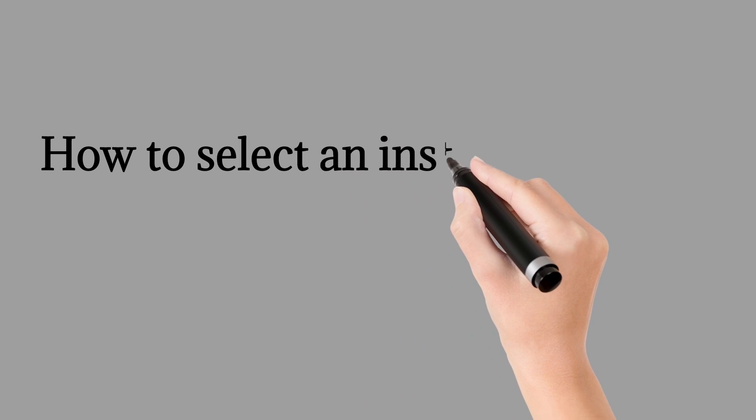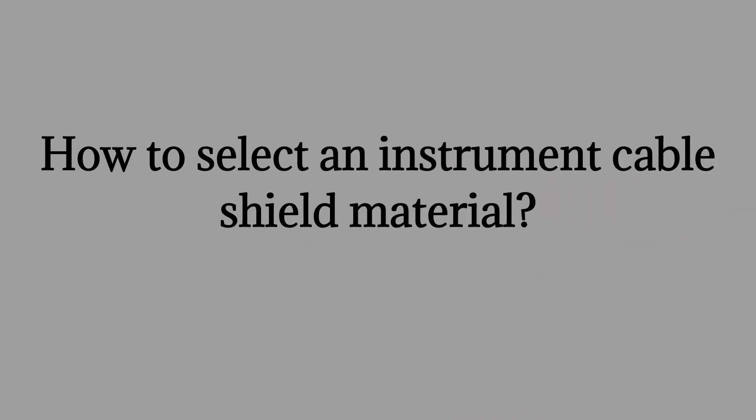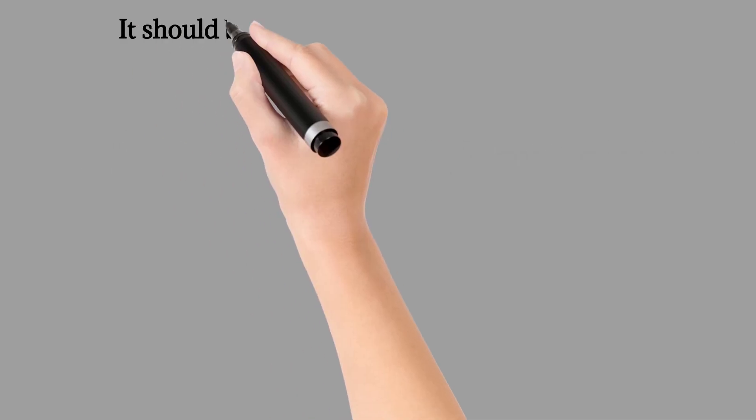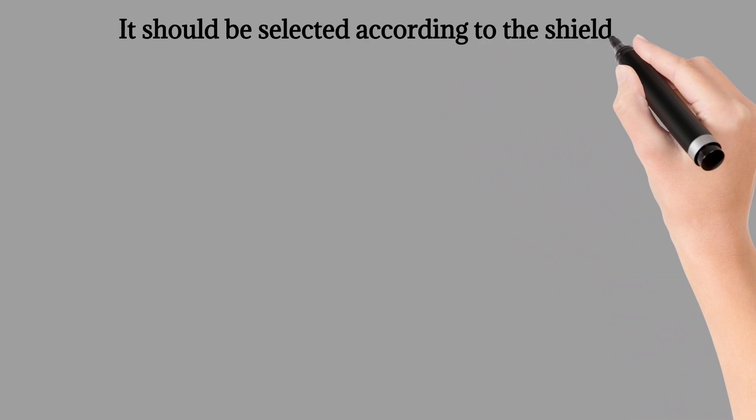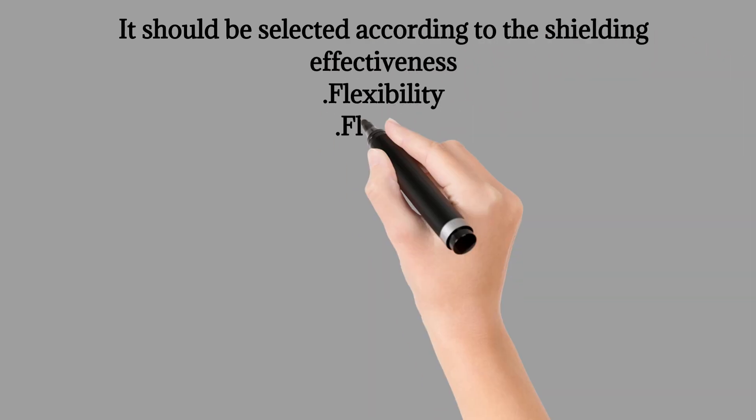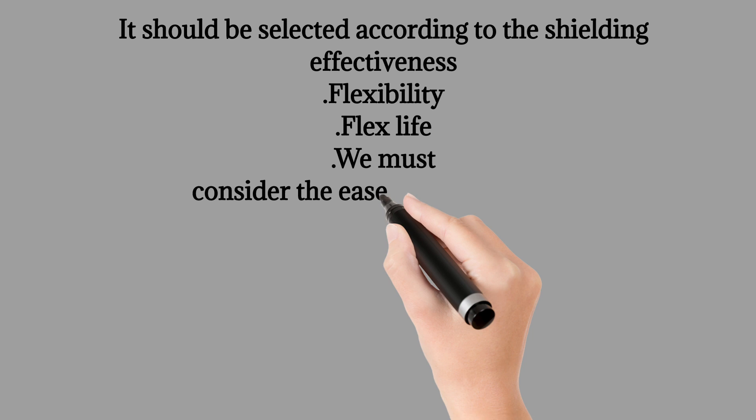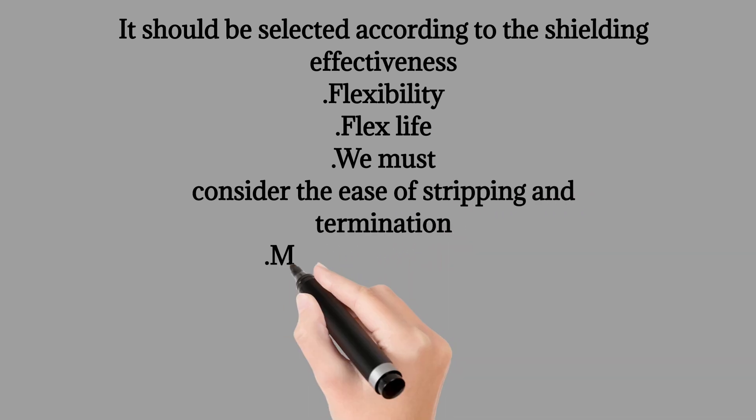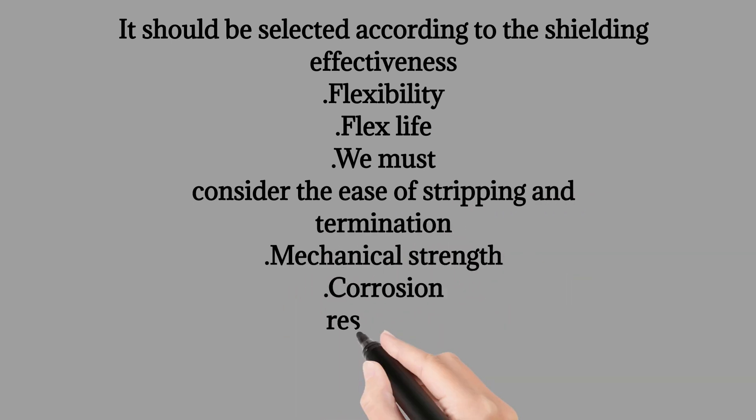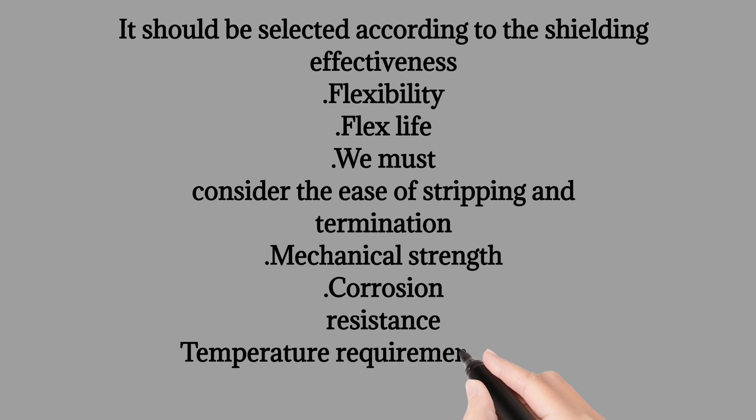How to select an instrument cable shield material? It should be selected according to the shielding effectiveness, flexibility, flex life, we must consider the ease of stripping and termination, mechanical strength, corrosion resistance, temperature requirements must be considered.